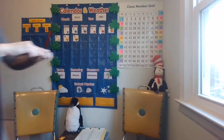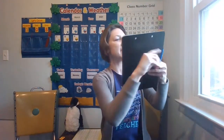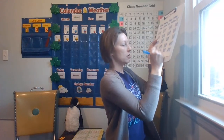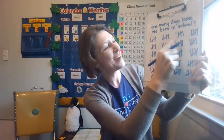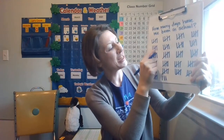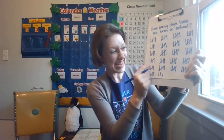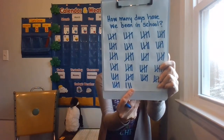And now let's do our tally mark. How many days have we been in school? 5, 10, 15, 20, 25, 30, 35, 40, 45, 50, 55, 60, 65, 70, 75, 80, 85, 90, 95, 100, 105, 106, 107, 108.